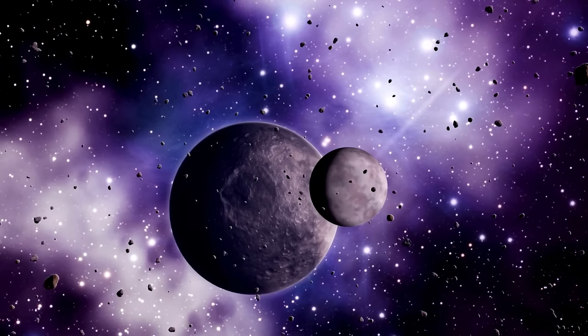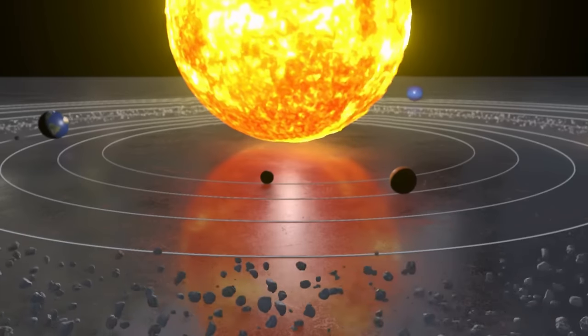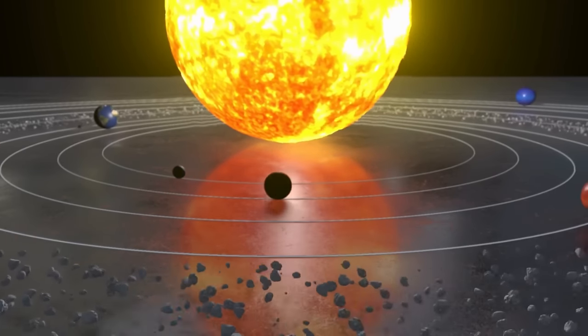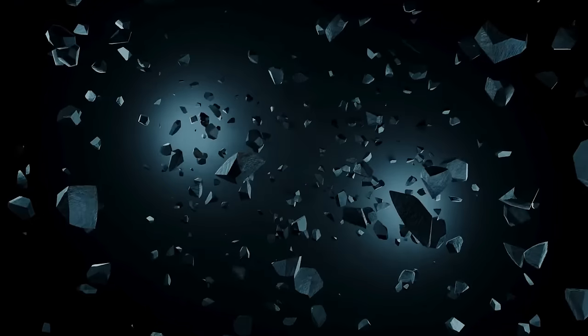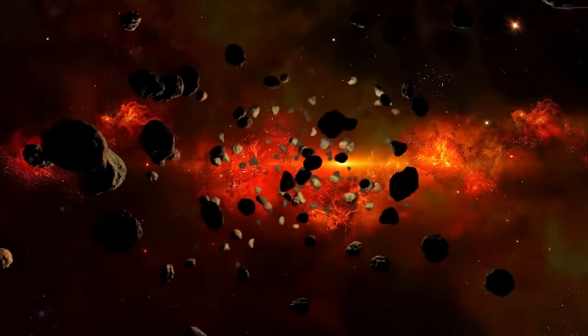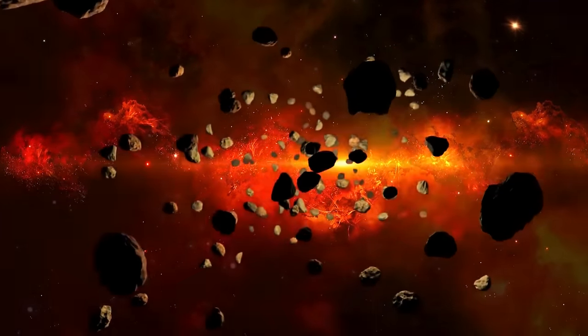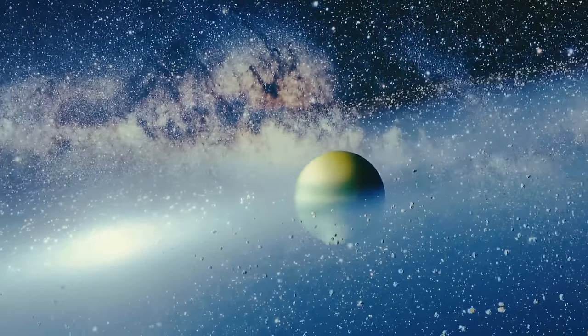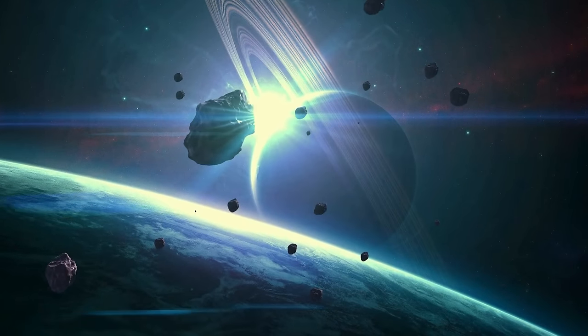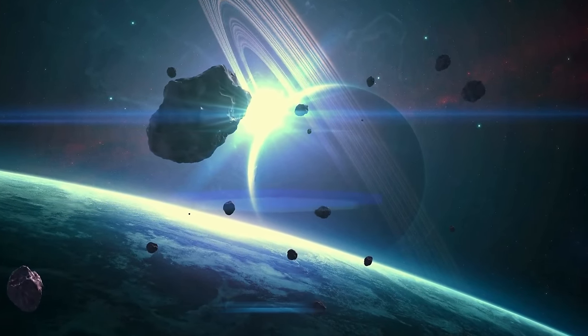Additionally, if Oumuamua had been outgassing, it would have resulted in a rapid change in its spin, but no such violent spin was observed. According to Loeb and Bialy, radiation pressure was the most plausible cause for the increase in velocity. However, if Oumuamua was neither a comet nor an asteroid, what could it be? And what could explain all of its peculiar behavior?